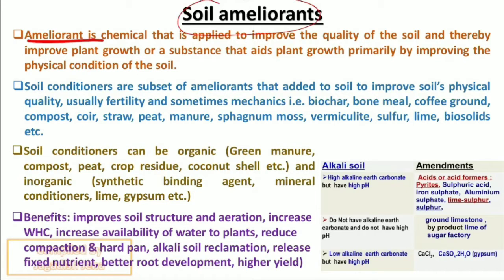Soil conditioner is similar to ameliorant — it is a subset of ameliorant that is added to soil to improve soil physical quality, usually fertility and sometimes mechanics. Examples include biochar, bone meal, coffee ground, compost, coir, and straw.